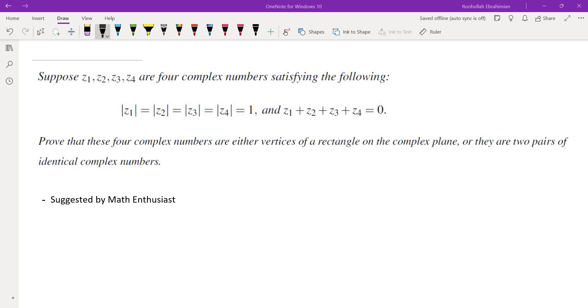Suppose z1 through z4 are four complex numbers satisfying these two conditions: the absolute value of zi's are all 1, and the sum of them is 0. The question is asking us to show that they are either vertices of a rectangle or they are pairs of identical complex numbers. This problem was suggested by a user named Math Enthusiast.